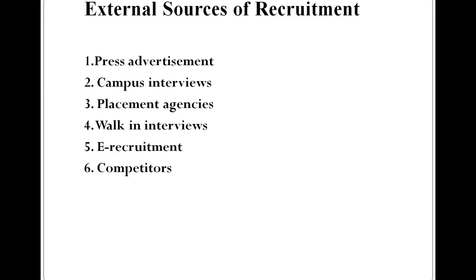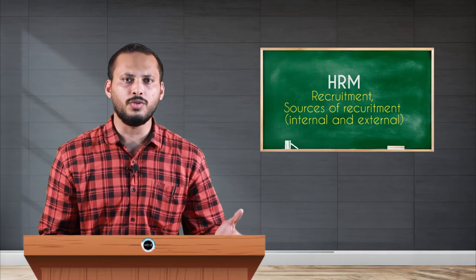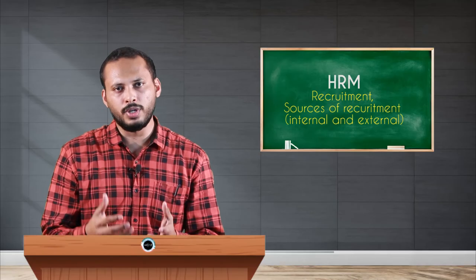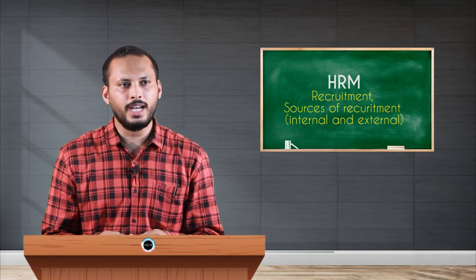The second source of recruitment is external source of recruitment — getting people from outside the organization. The first external source is press advertisement, where the company advertises vacancies in newspapers or consumer journals and expects outside applicants to apply. The second external source is campus interviews, where the human resource department goes to educational institutions, conducts interviews for students, and selects the most suitable candidate.